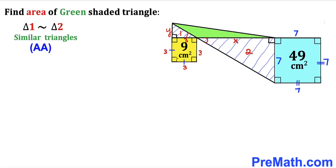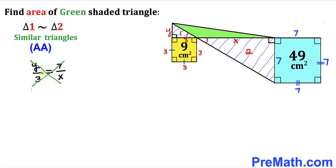Since the triangles are similar, we set up a proportion. For the smaller triangle the ratio is y divided by 3, which equals the ratio for the larger triangle: 7 divided by x. Cross multiplying gives us x times y equals 3 times 7, which is 21.